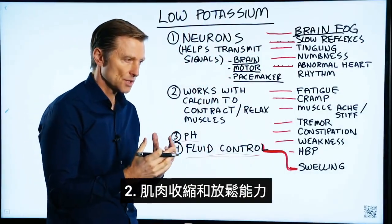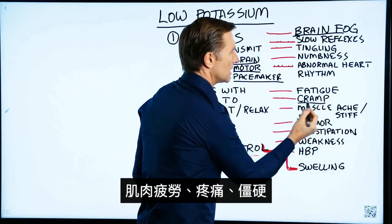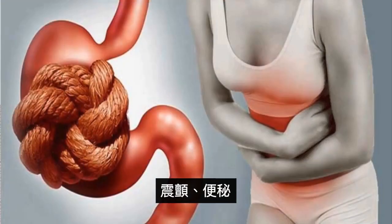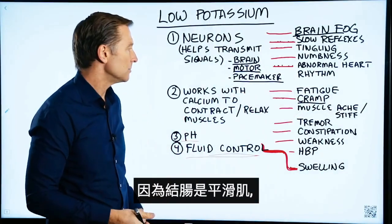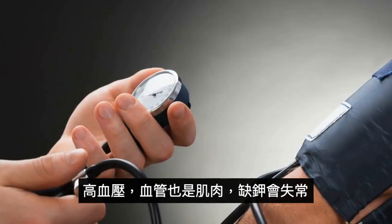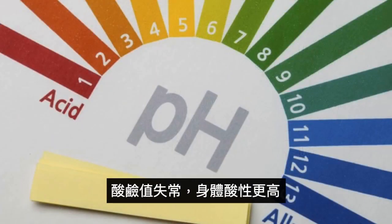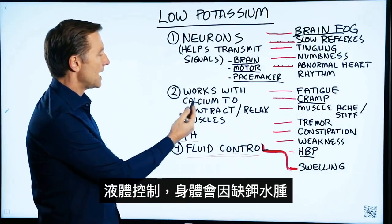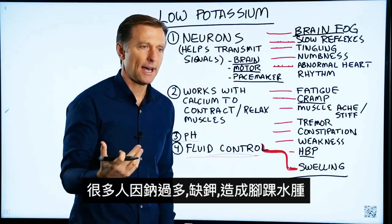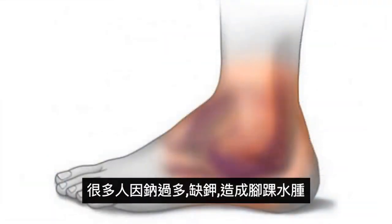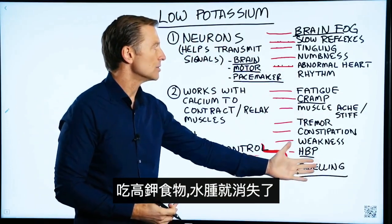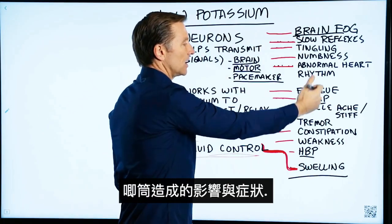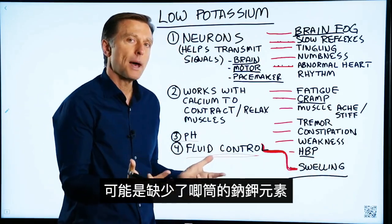Number two has to do with the ability for the muscles to contract and relax. That can show up as cramps, muscle fatigue, muscle aches, muscle stiffness, tremors, constipation — because your colon is smooth muscle — weakness in general, and high blood pressure because your arteries have a type of muscle that can become dysfunctional. If you're deficient in potassium, the body tends to be more acidic. And for fluid control, a potassium deficiency can cause swelling. How many people have way too much sodium versus potassium and their ankles are just swollen? When you consume foods higher in potassium, the swelling goes away.